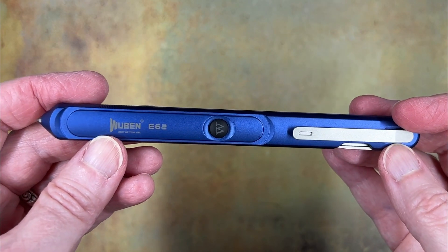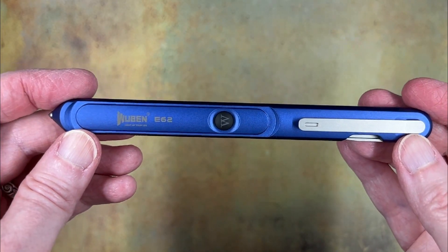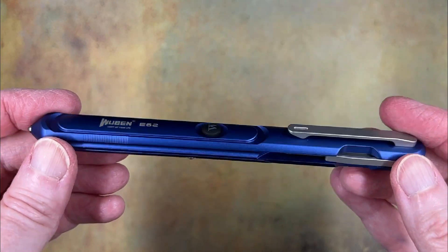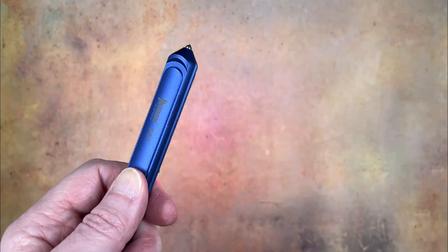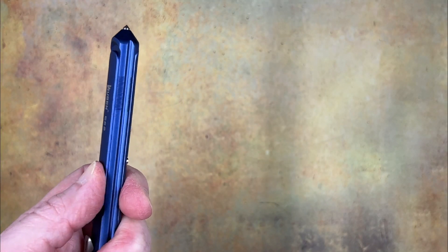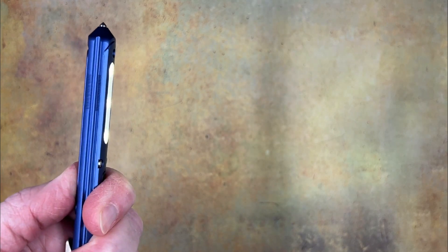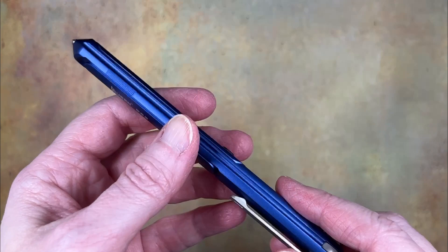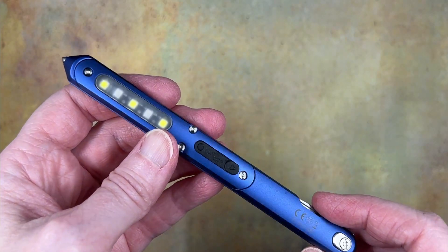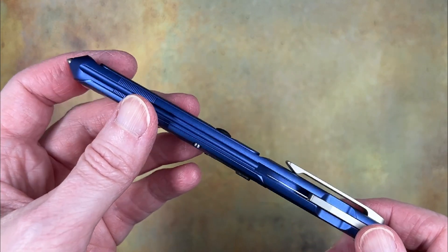Is the Wubin E62 multifunction pen light useful? Yeah, it's nice to have a light in your pocket. It's useful for that, but I do wish that it had a built-in pen because I think that would make it infinitely more useful.